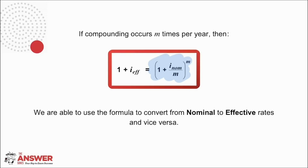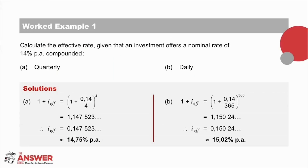Given this formula, we are able to convert from one to the other. Let's look now at the concept of these interest rates further using examples. In this worked example, we have been asked to calculate the effective rate. We are working with 14% per annum — in A it is compounded quarterly, and in B it is compounded daily.